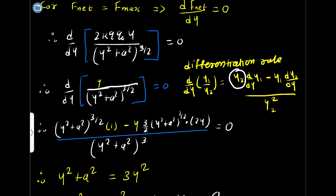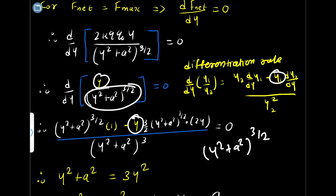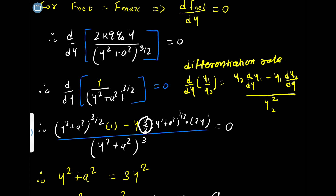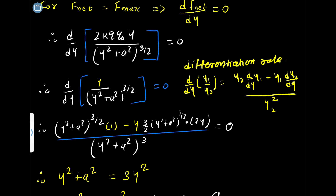Keeping the denominator y2 as it is gives (y squared plus a squared) raised to 3/2, and differentiating y1 gives dy/dy which equals 1. Then keeping y1 as y and differentiating the denominator: the power 3/2 comes down, giving (3/2)(y squared plus a squared) raised to 1/2, and differentiating inside the bracket gives 2y since a is a constant.